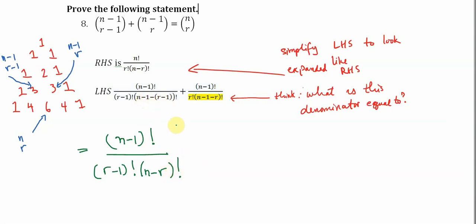And then over here as well, on the second term, we still have the same thing, n minus one factorial over r factorial. And then I'm going to rearrange these letters a little bit. So this is going to be n minus r minus one factorial.